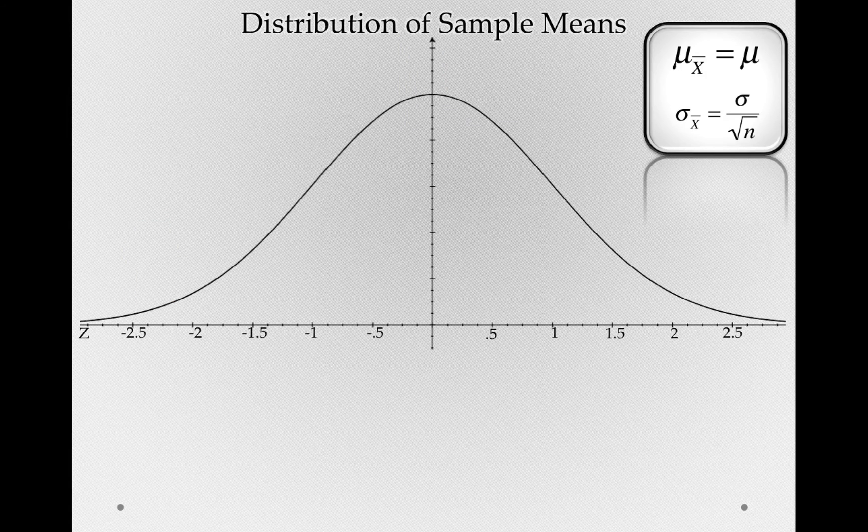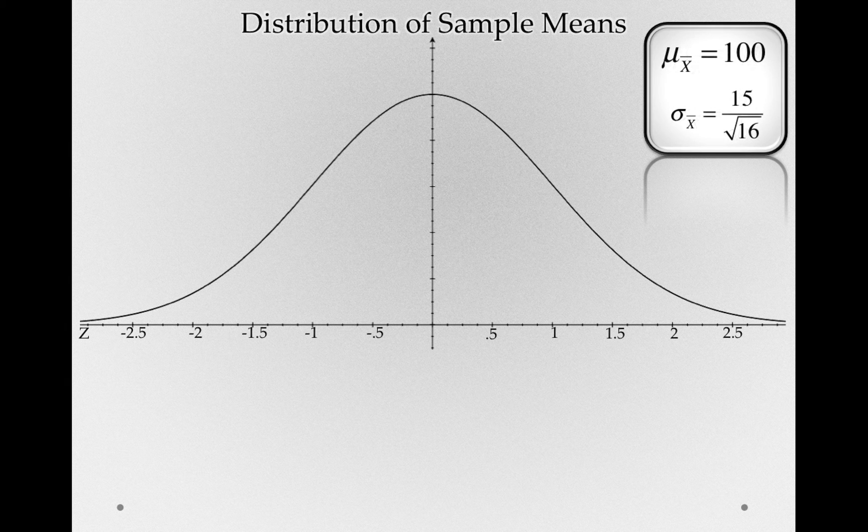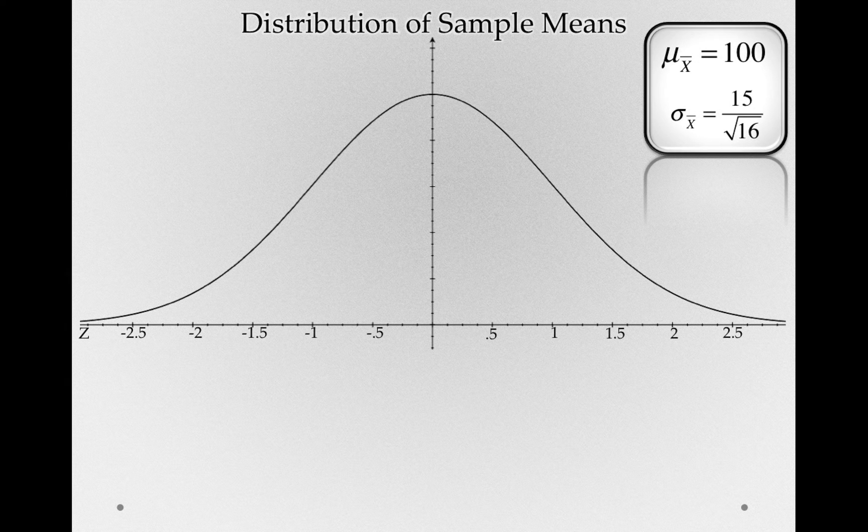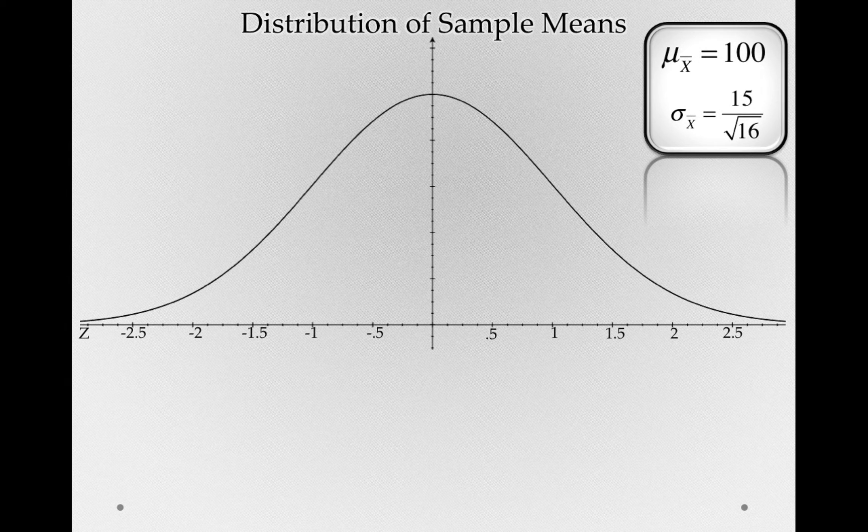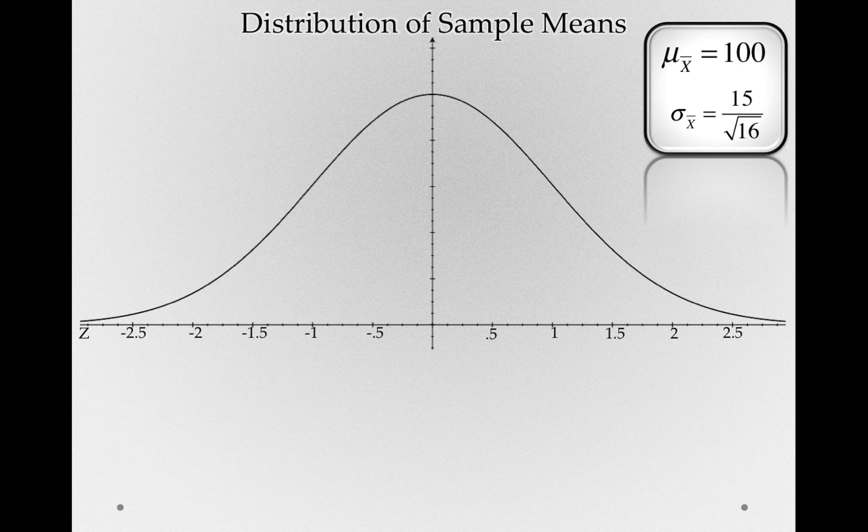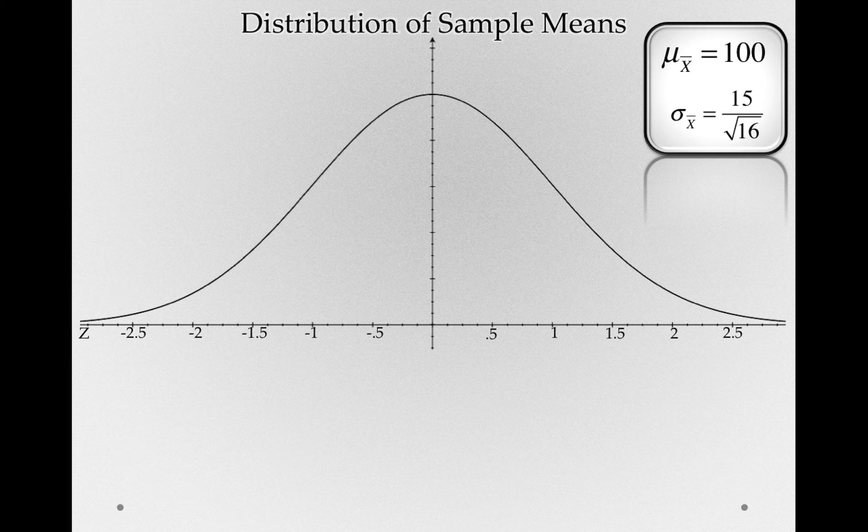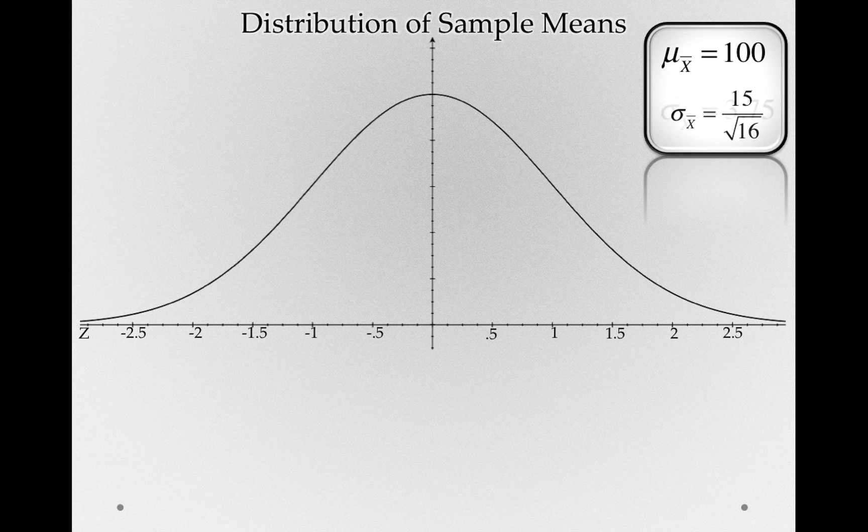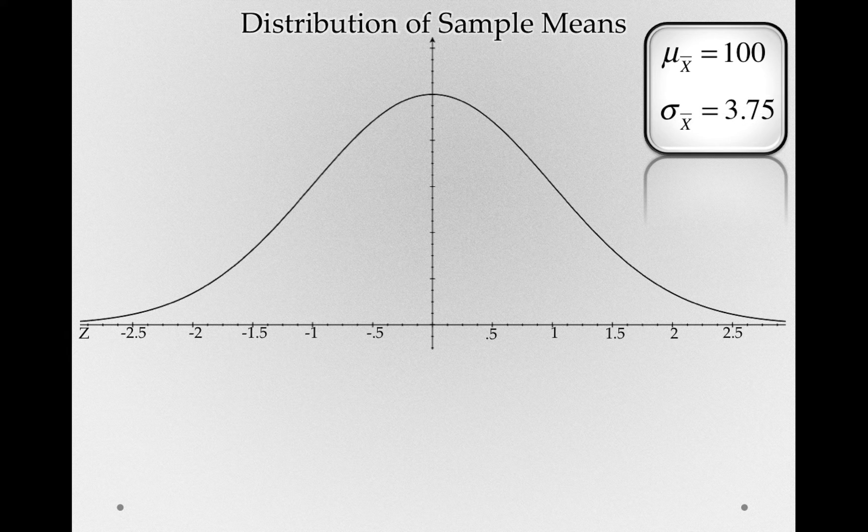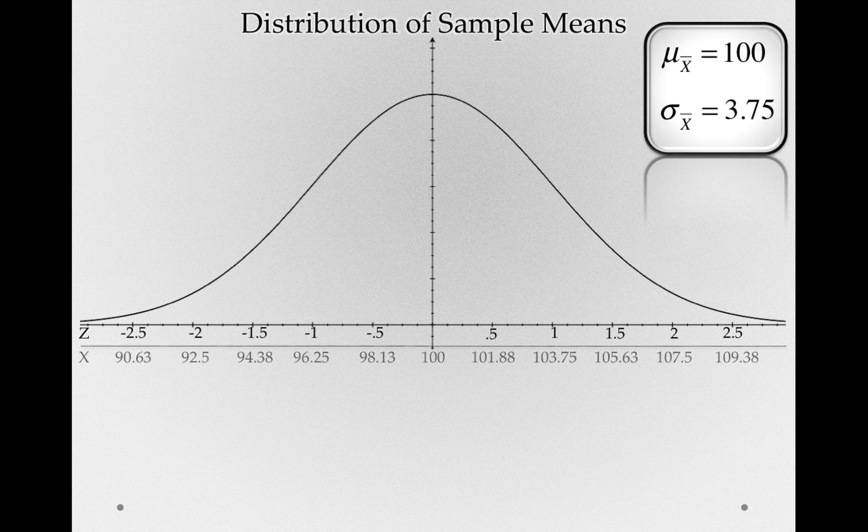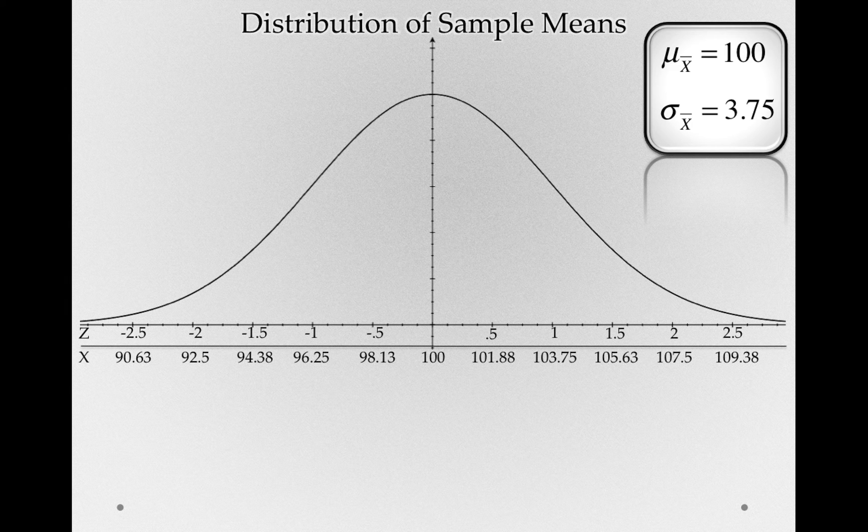With these values, we can populate the characteristics of this distribution of sample means. Specifically, the center of the distribution of sample means would be exactly 100, and the standard error would be 15 over 4, or the square root of 16. So, with these characteristics, we can draw an x-bar axis on this distribution of sample means.